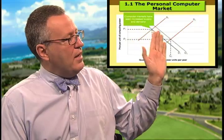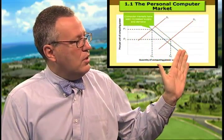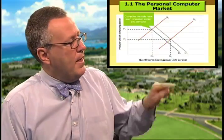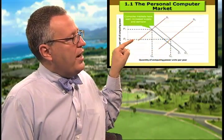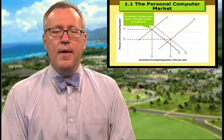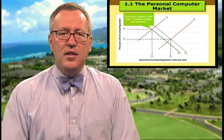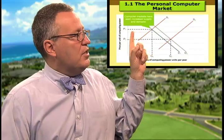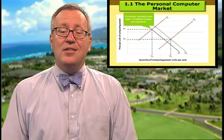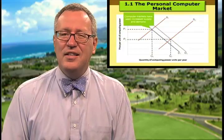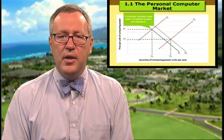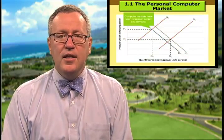Our demand curve shifts to demand two and our supply curve shifts to supply two, establishing a new equilibrium at price two and quantity two. The two events — increased supply and increased demand — cause a decrease in price and a corresponding increase in quantity. Sometimes demand and supply curves shift in a way that makes it difficult to understand what's happening to price and quantity, so watch the curves carefully.